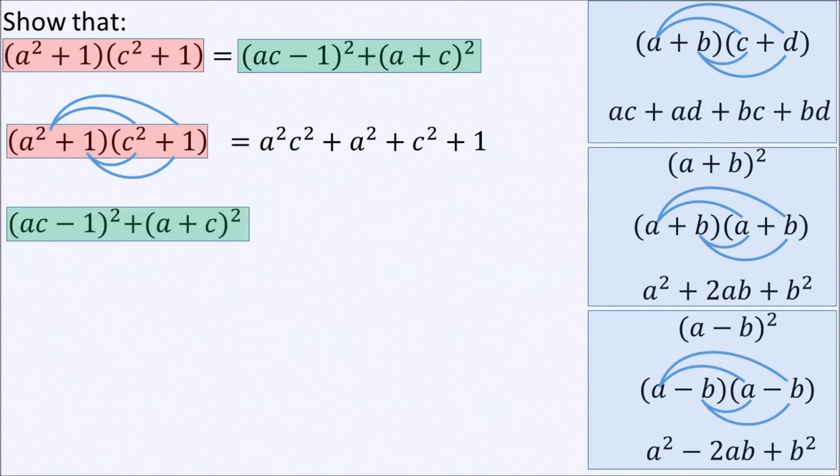We turn now to the other side of the equation highlighted in green. Here the first bracket is AC minus 1 all squared. We will use this concept. So this becomes A squared C squared minus 2AC plus 1, since the rule says the first element should be squared minus double the product of both elements inside the bracket plus the square of the second element.